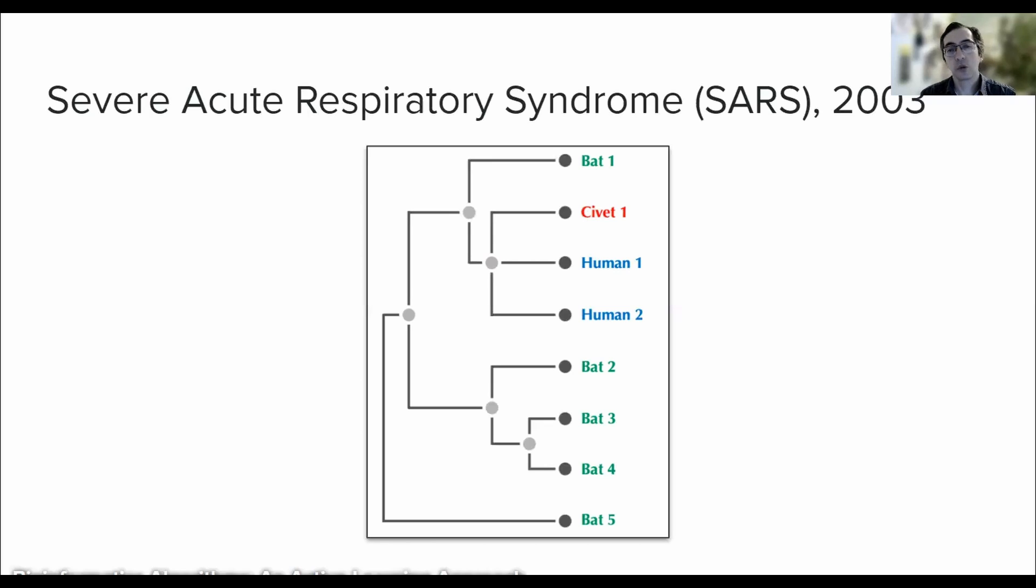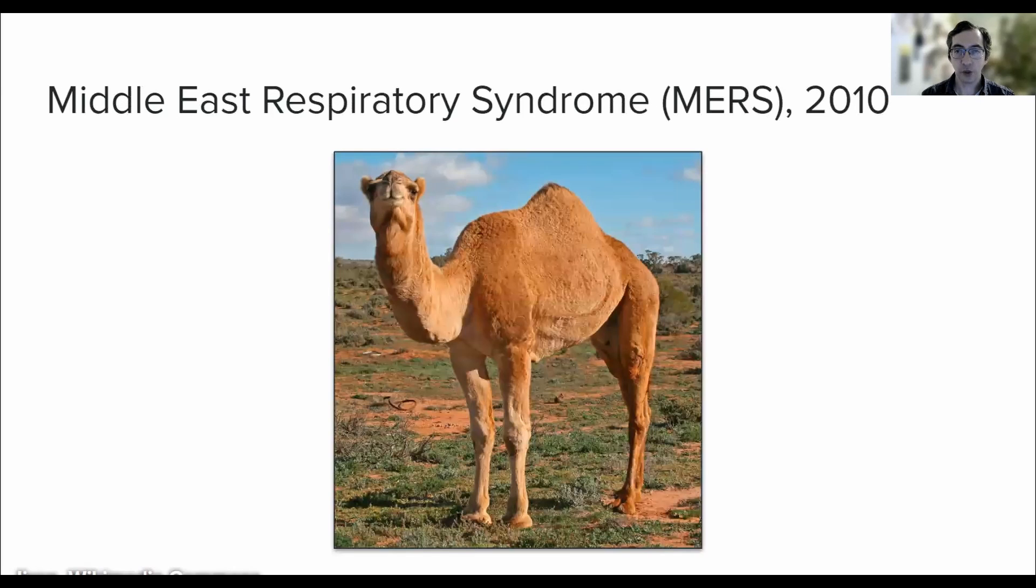Having explored the SARS-CoV-1, let us now turn to our second case study. The second outbreak of interest to the intermediate host hypothesis is the 2012 Middle East Respiratory Syndrome or MERS epidemic, which was caused by the virus MERS-CoV. Similar to SARS-CoV-1, MERS-CoV was suspected to have originated from one of two sources, either directly from bats or through a camel intermediary.